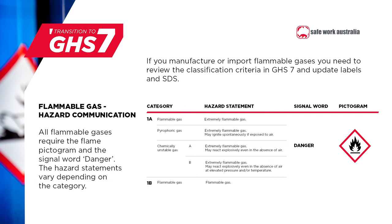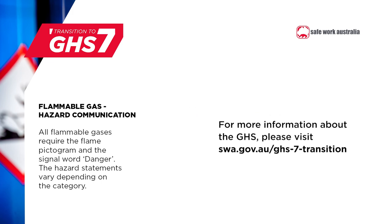The hazard communication requirements for the new Category 1a are the same as the old Category 1. All flammable gases require the flame pictogram and the signal word 'danger.' The hazard statements vary depending on the specific hazard category and are shown on the screen now. If you manufacture or import flammable gases, you need to review the classification criteria in GHS7 and prepare updated labels and safety data sheets for these products. Remember that more information about these changes is available on our website.